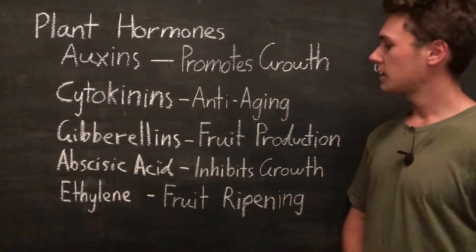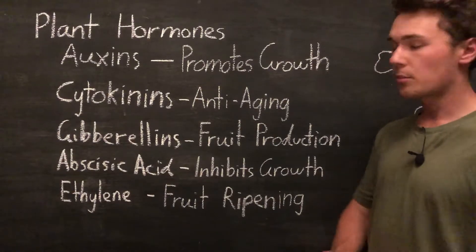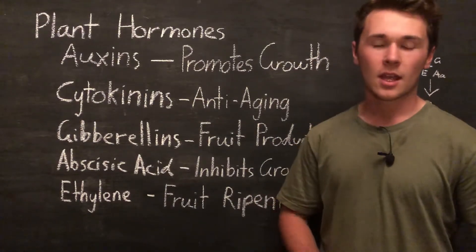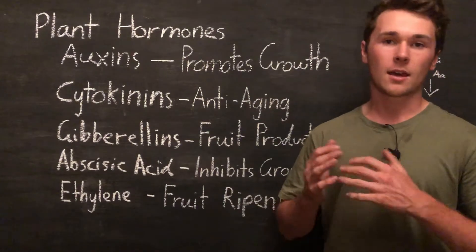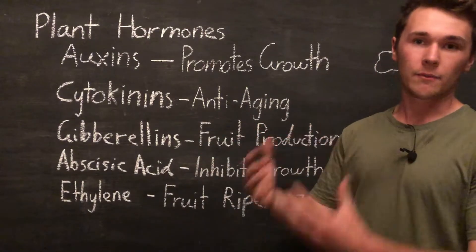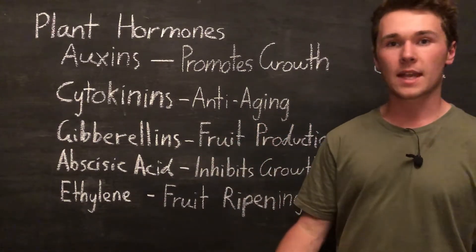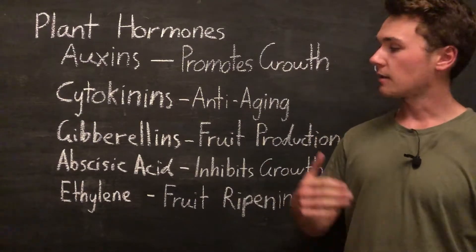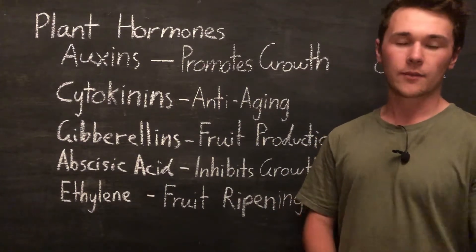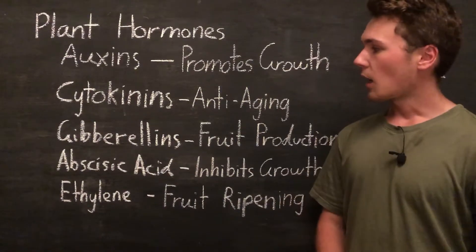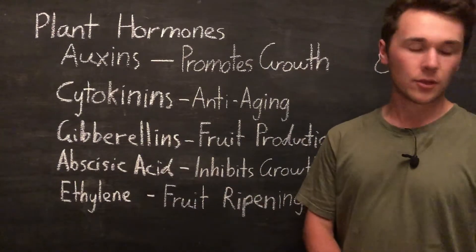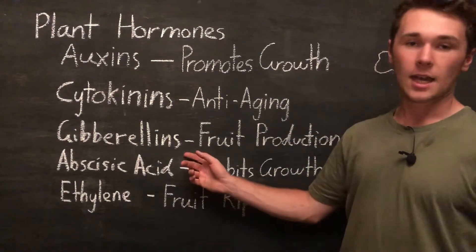Next, we have gibberellins, and these are mainly used in fruit production. They promote seed and bud germination, stem elongation, and growth, and they also stimulate flowering and fruit development. These hormones have been used to develop fruits on flowers that haven't been pollinated and are hence not fertilized. Otherwise, these flowers wouldn't develop fruit, but with gibberellins they help with the development of this fruit. This can be applied as a spray.